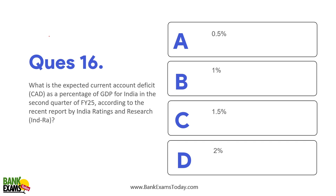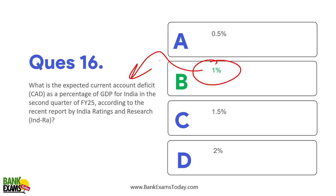What is the expected current account deficit as a percentage of GDP in the second quarter of 2025 as per India Ratings and Research? It is 1% current account deficit. Please remember it is 1%, and this estimate is by India Ratings and Research — not by RBI or the Government of India.